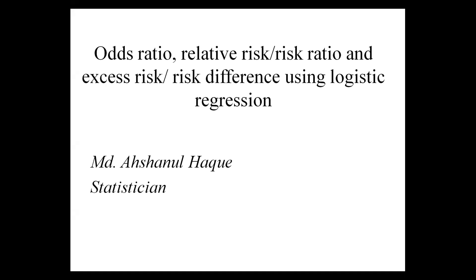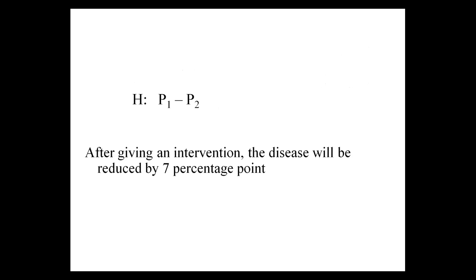Hello dear friend, today I will discuss an important issue: how to calculate odds ratio, relative risk, and risk difference using logistic regression. Generally we calculate odds ratio as strength of association using logistic regression, but we are also able to calculate relative risk and risk difference using logistic regression. During proposal writing, most of the time our hypothesis is based on risk difference. For example, our research hypothesis is that after giving an intervention, the disease will be reduced by seven percentage points — this hypothesis is based on a risk difference or prevalence difference.